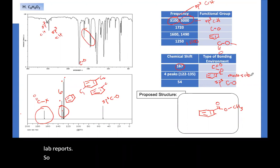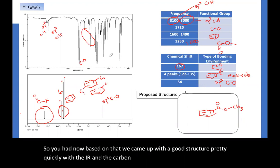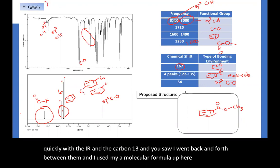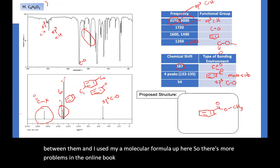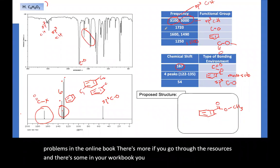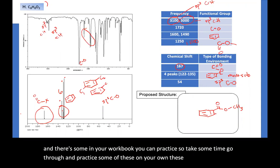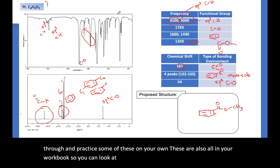So you have now, based on that, we came up with a good structure pretty quickly with the IR and the carbon-13. And you saw I went back and forth between them and I used my molecular formula up here. So there's more problems in the online book. There's more if you go through the resources. And there's some in your workbook you can practice. So take some time, go through and practice some of these on your own. These are also all in your workbook. So you can look at them and practice them again without and check your answers. Okay, have fun doing some spectral problems.